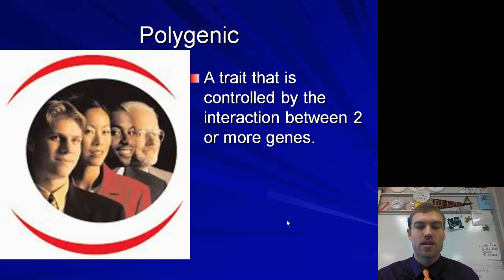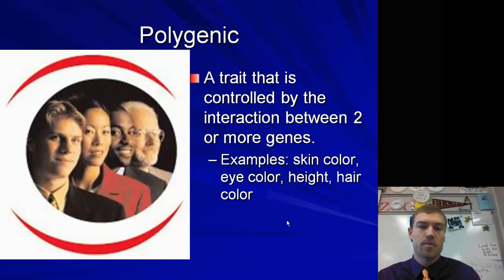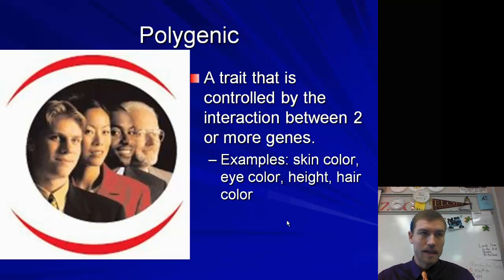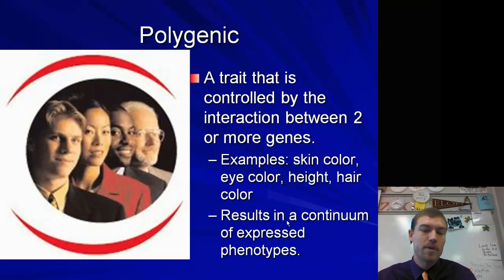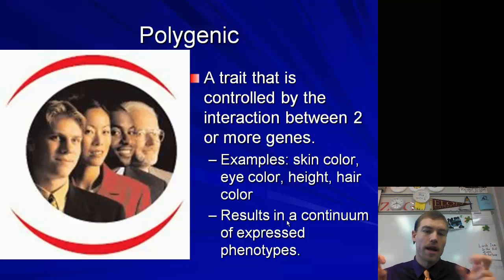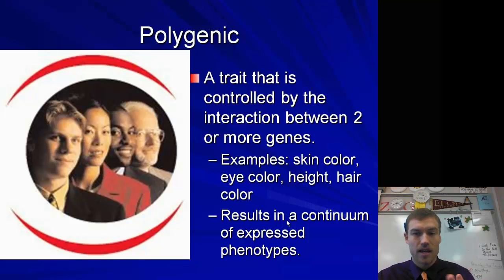Polygenic traits are controlled by the interaction between two or more genes. Examples include skin color, eye color, height, and hair color. There are no real Punnett squares we can do for these because more than one or two genes are being combined. Because of this, we get a continuum of expressed phenotypes — that's why people can have slight variations in skin color, because it's being controlled by two or more genes.